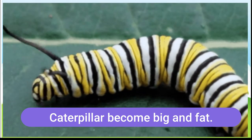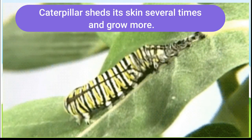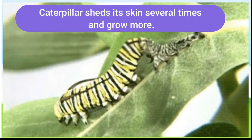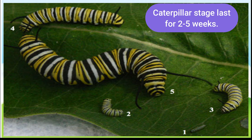Caterpillars have 16 legs. As the caterpillar grows big and fat, it sheds its skin several times to grow more. Once the caterpillar is big enough, it stops feeding. This larva stage lasts for two to five weeks, varying from species to species and depending on growing conditions.